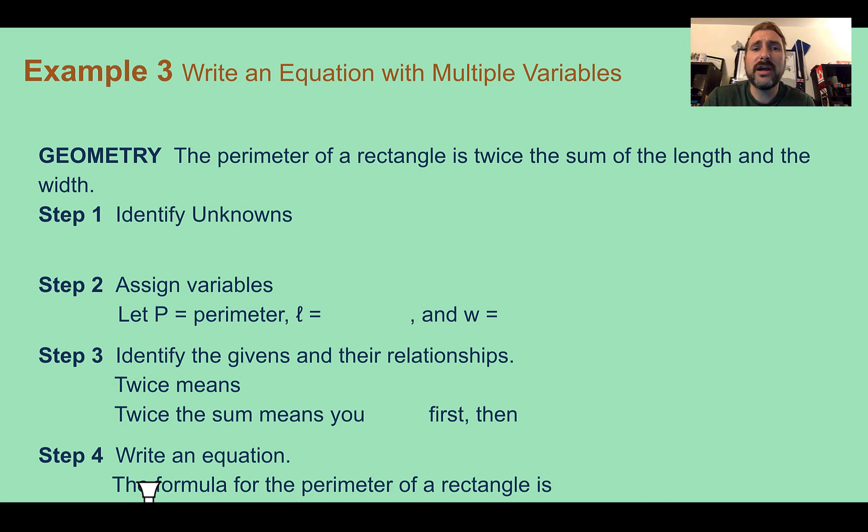The perimeter of a rectangle is twice the sum of the length and the width. Step one, let's identify our unknowns. We don't know here the perimeter or the length or the width. They don't tell us any of that information. What they do tell us is that the perimeter is twice the sum of the length and the width.